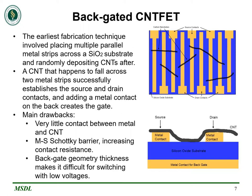Moving on to device fabrication, the earliest fabrication technique used multiple parallel metal strips across a silicon dioxide substrate. Carbon nanotubes would be deposited randomly across the entire surface. If a nanotube successfully lay across two different metal strips, these two strips now act as the source and drain. By adding a metal contact on the other side of the substrate, a gate is created. There are some main drawbacks, however: very little contact between the metal contacts and the carbon nanotube, a metal-to-semiconductor Schottky barrier which increases contact resistance, and the backgate geometry thickness makes it difficult for switching with low voltages. The Schottky barrier problem can be mitigated by choosing a metal with a work function that matches the substrate as closely as possible — typically, palladium is chosen as the metal.